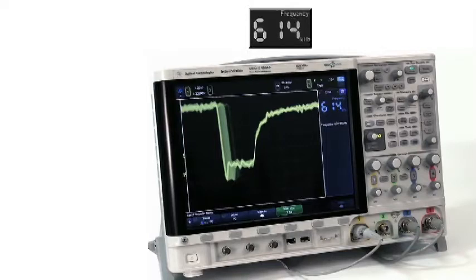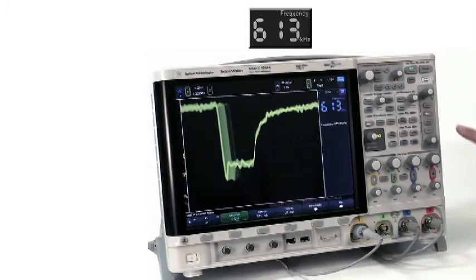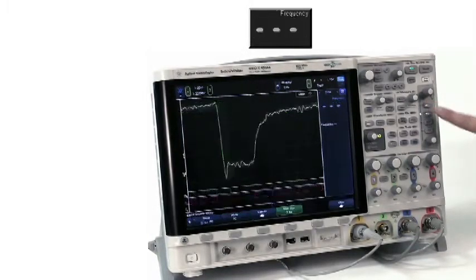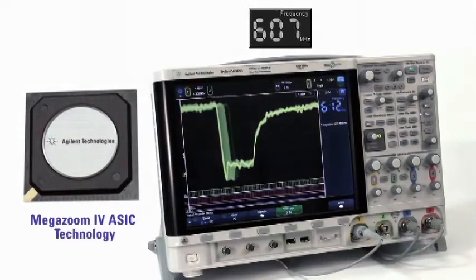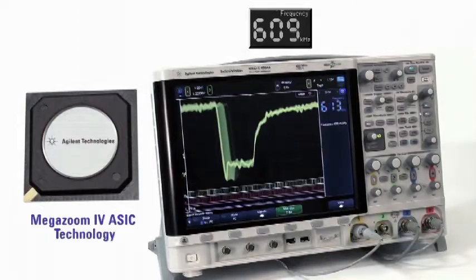As you enable digital channels and serial decode on the Agilent scope, its update rate is not greatly affected. This is due to our patented MegaZoom 4 ASIC that does digital acquisition and serial decode in hardware.